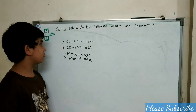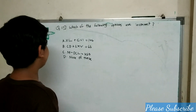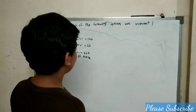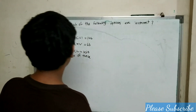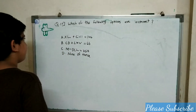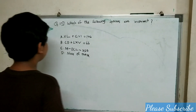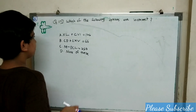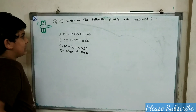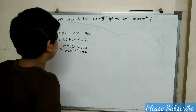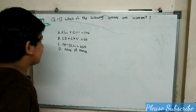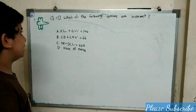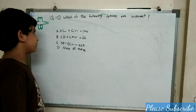This is question number 17. Which of the following options are incorrect? First we have to convert the Roman numerals into international numbers so that we can choose the correct answer.